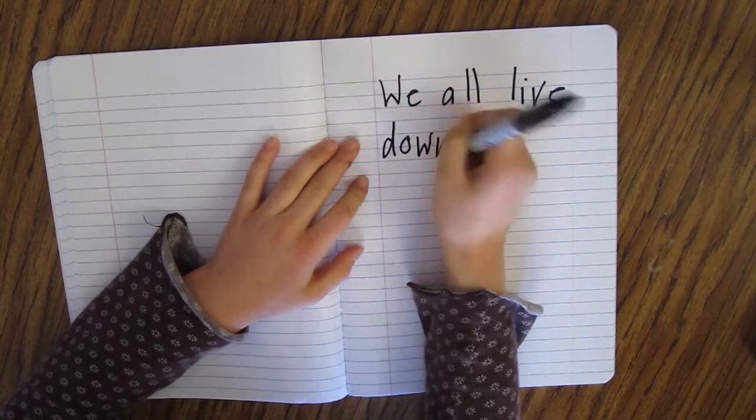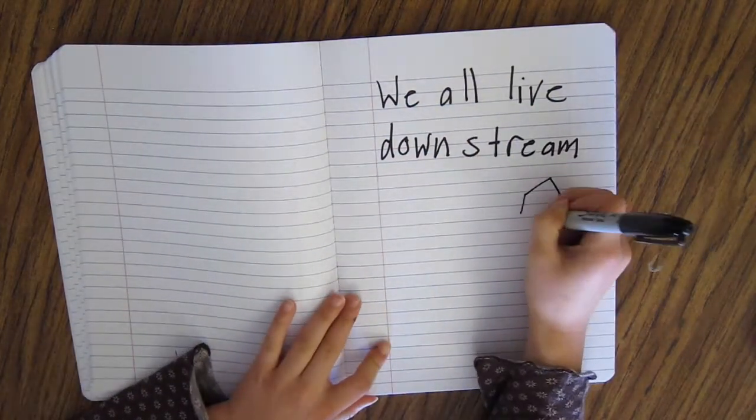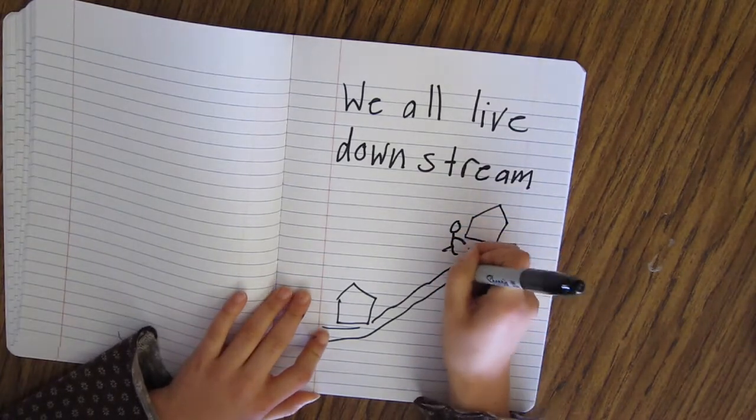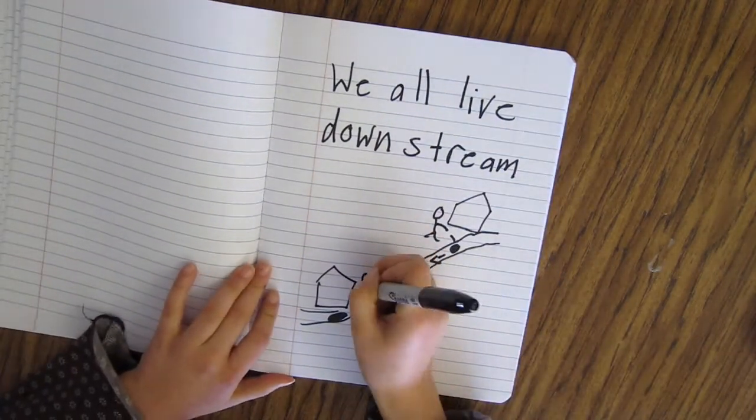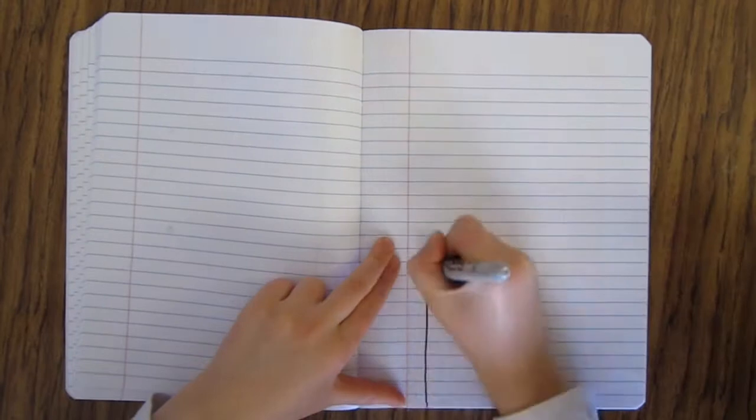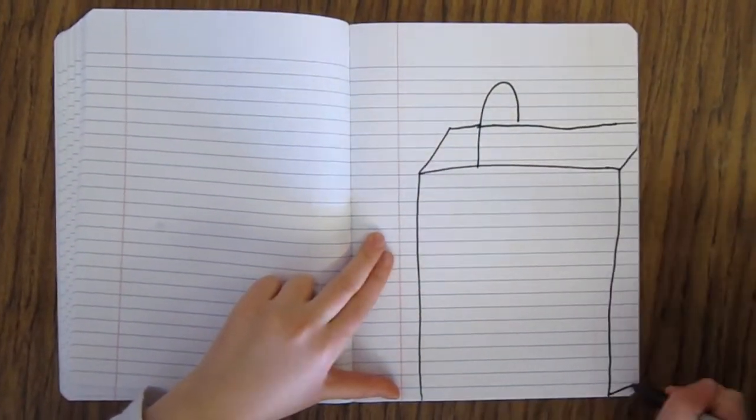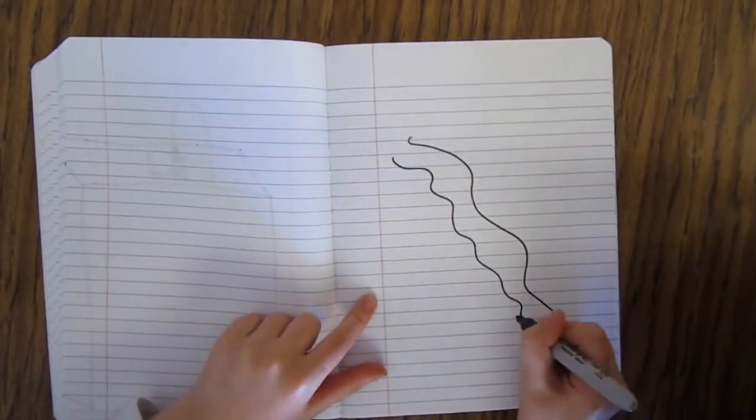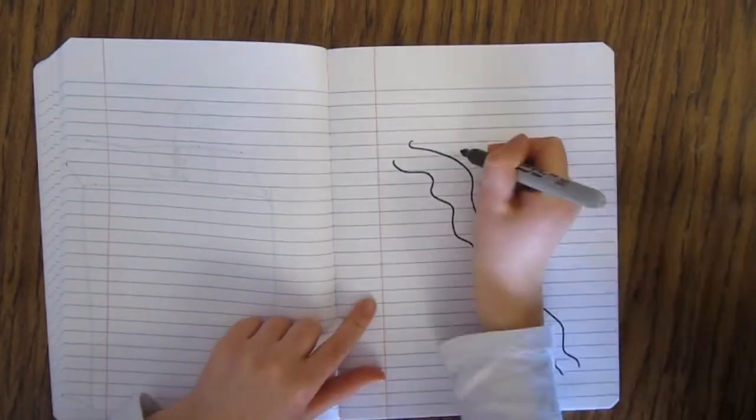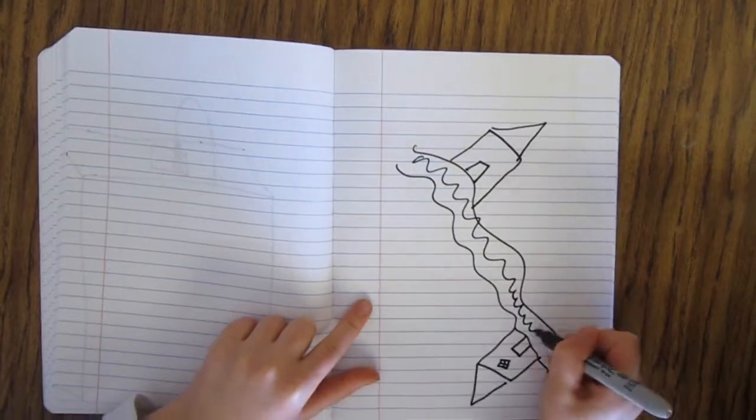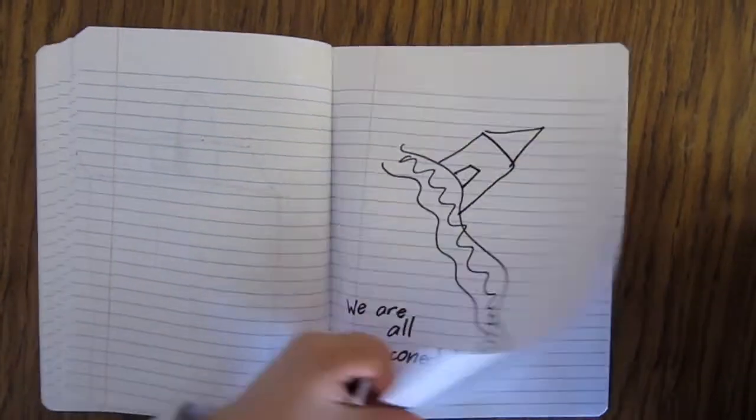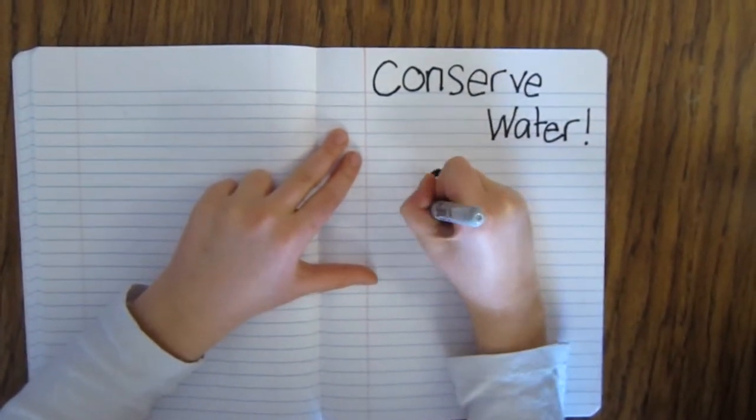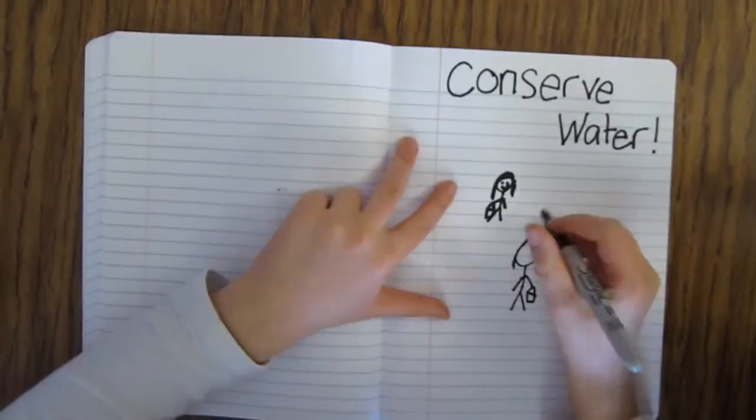Finally, we learned that we all live down the street, which means that the way we treat water affects the water that other people use. Here in Seattle, we're lucky to have unlimited access to clean, safe water. But we're all connected, and the water we have on Earth today is all the water we will ever have. It is a finite resource. We need to conserve it so that everyone can have access to the safe water that they need.